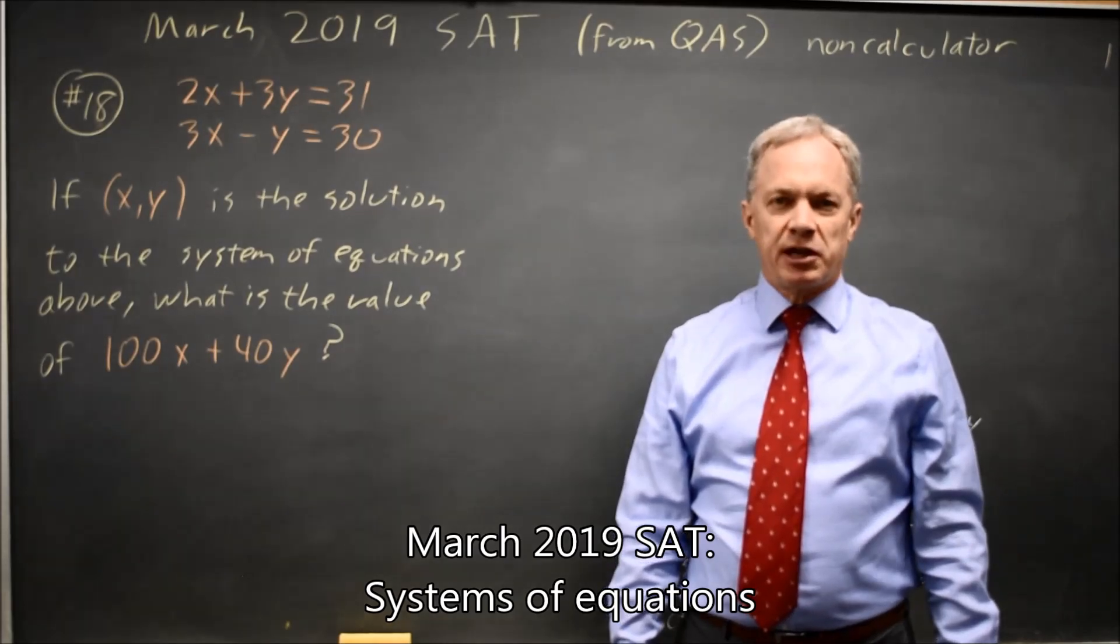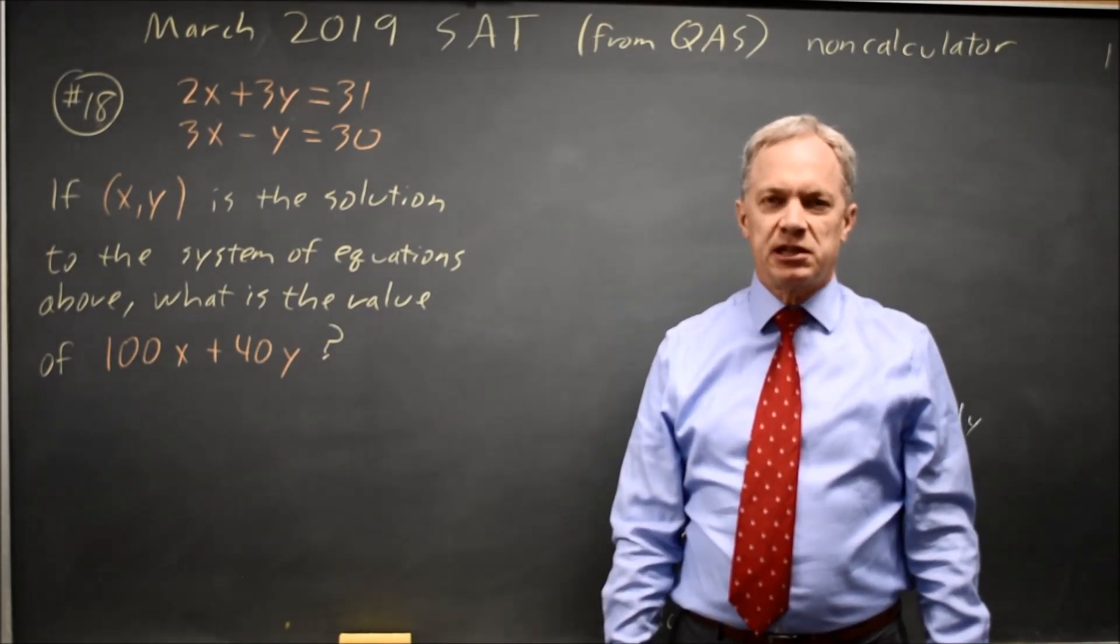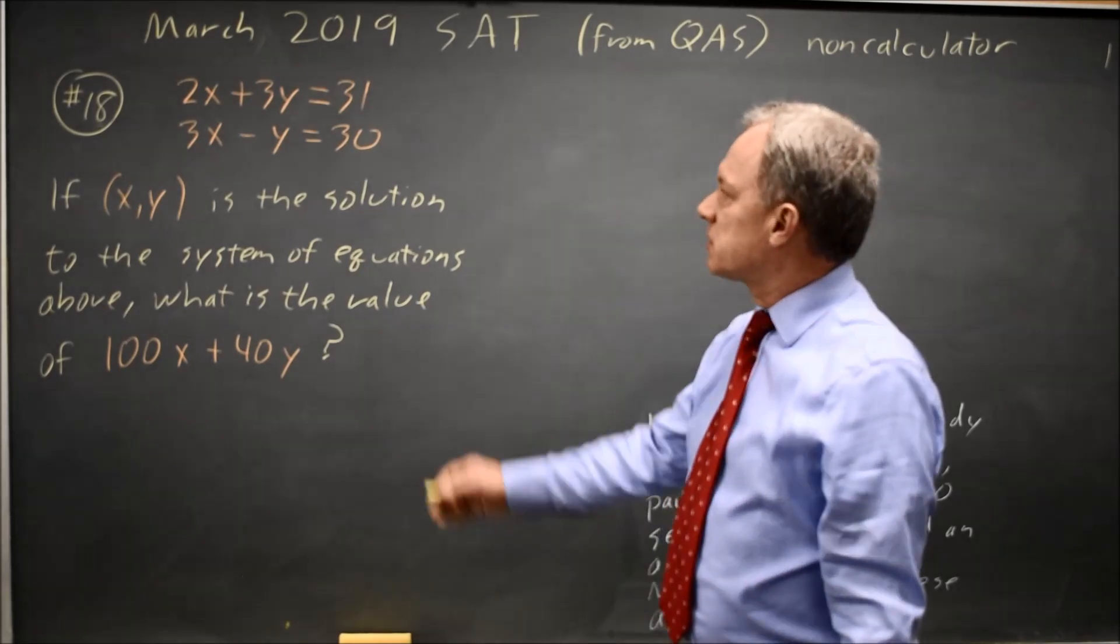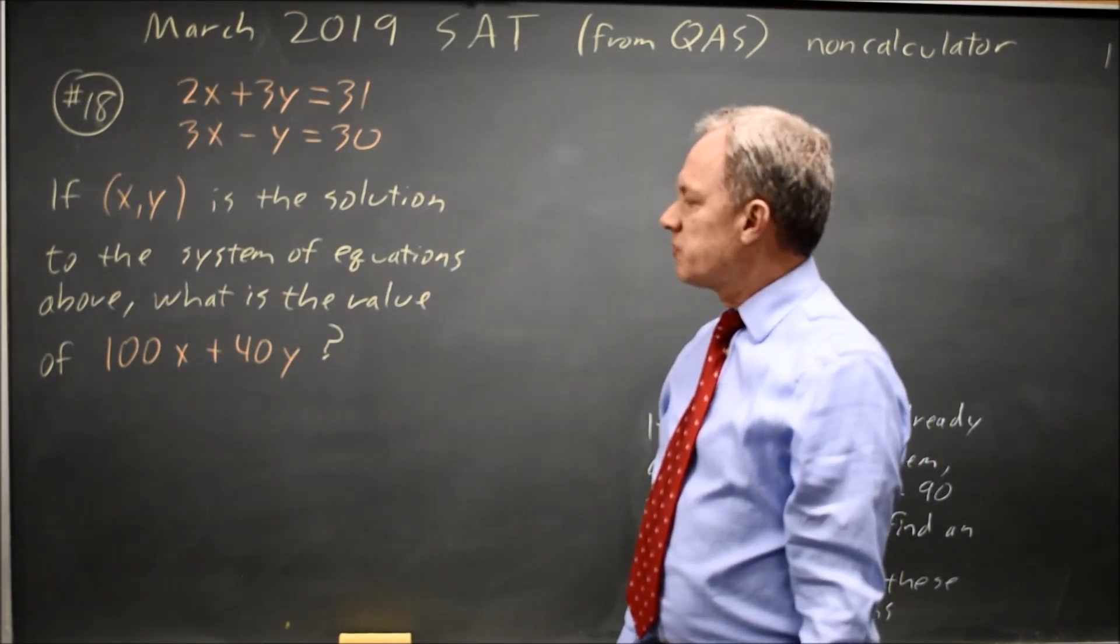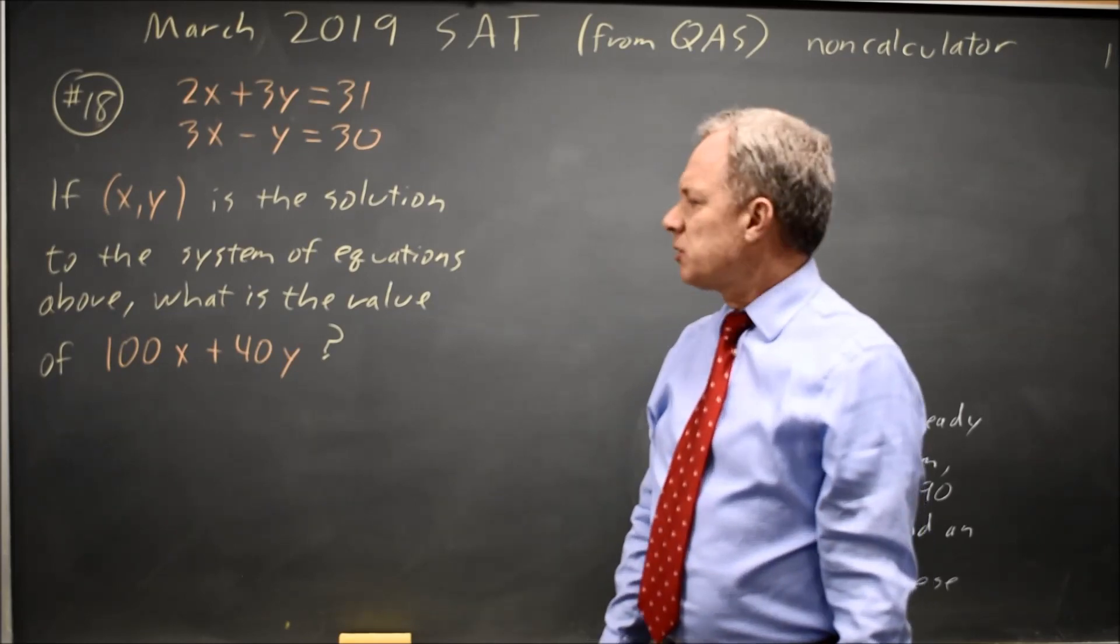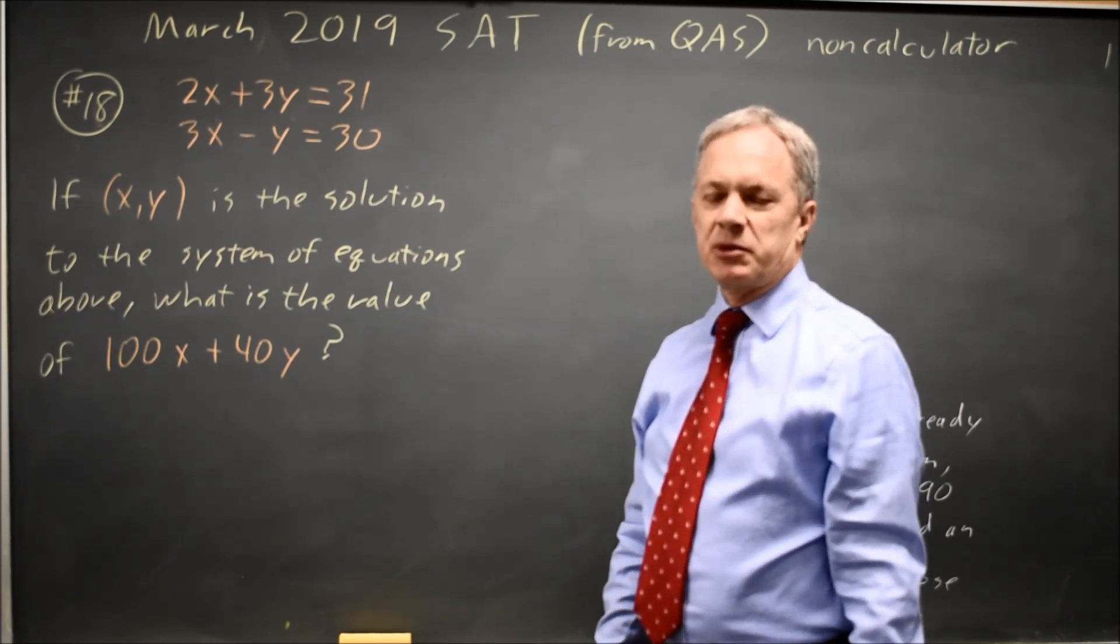This is non-calculator question number 18 from the March 2019 SAT. College Board gives us a system of equations and says if XY is the solution to the system, what's the value of 100X plus 40Y, which is an odd combination.